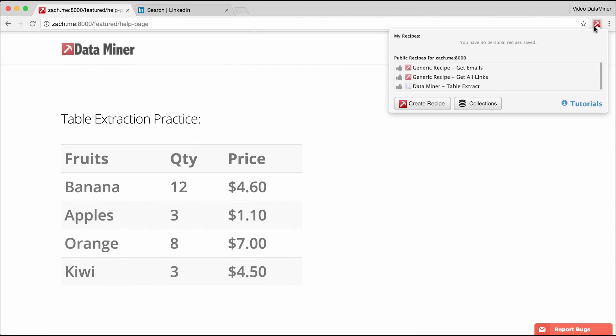Now, as you can see, a window popped up. This window is displaying all of the public tools for the site, or as Dataminr calls them, public recipes. A recipe is simply a set of extraction rules that Dataminr uses to capture the data.